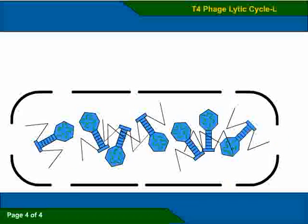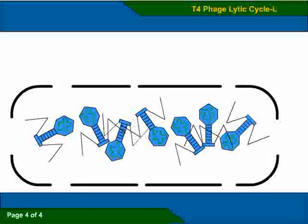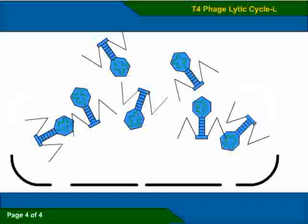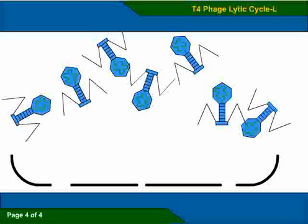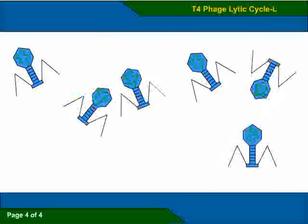With the cell wall damaged, osmosis takes effect and the host cell starts to swell and eventually bursts. This releases 100 to 200 new phage particles. The host cell is destroyed and the new phage particles go on to infect new cells.